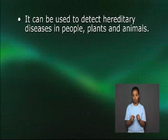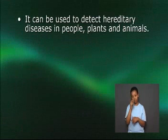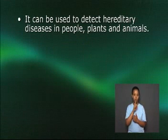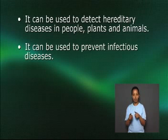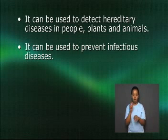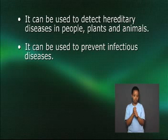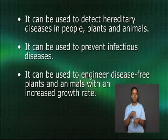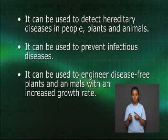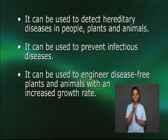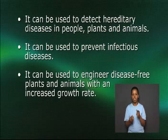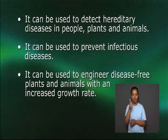Genetic engineering can be used to detect hereditary diseases in people, plants, and animals. It can be used to prevent infectious diseases by implanting the genes that code for antiviral proteins specific to each antigen. Genetic engineering can be used to engineer disease-free plants and animals with an increased growth rate. This would reduce the use of fertilizers and pesticides and increase the amount of food available to people in need.